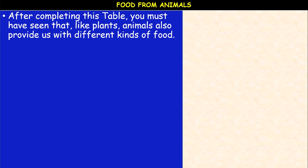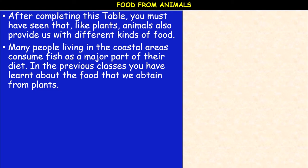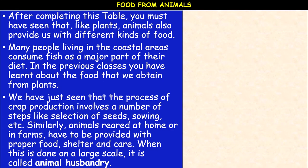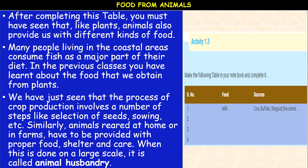Let us proceed to food from animals. You must have seen that like plants, animals also provide us with different kinds of food. Many people living in coastal areas consume fish as a major part of their diet. The process of crop production involves a number of steps like selection of seeds and sowing. Similarly, animals reared at home or in farms have to be provided with proper food, shelter, and care. When this is done on a large scale, it is called animal husbandry.